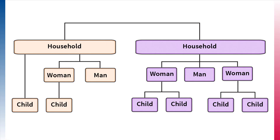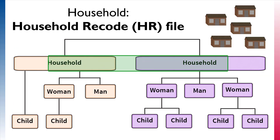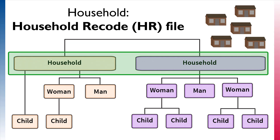Here is a chart showing the housing structure of two households. Let's examine where the information about these two households would be located in different DHS data files. The Household Recode file, or HR file, contains data on all the households interviewed in the survey. In other words, the unit of analysis, or rows, in the HR file is the number of households.